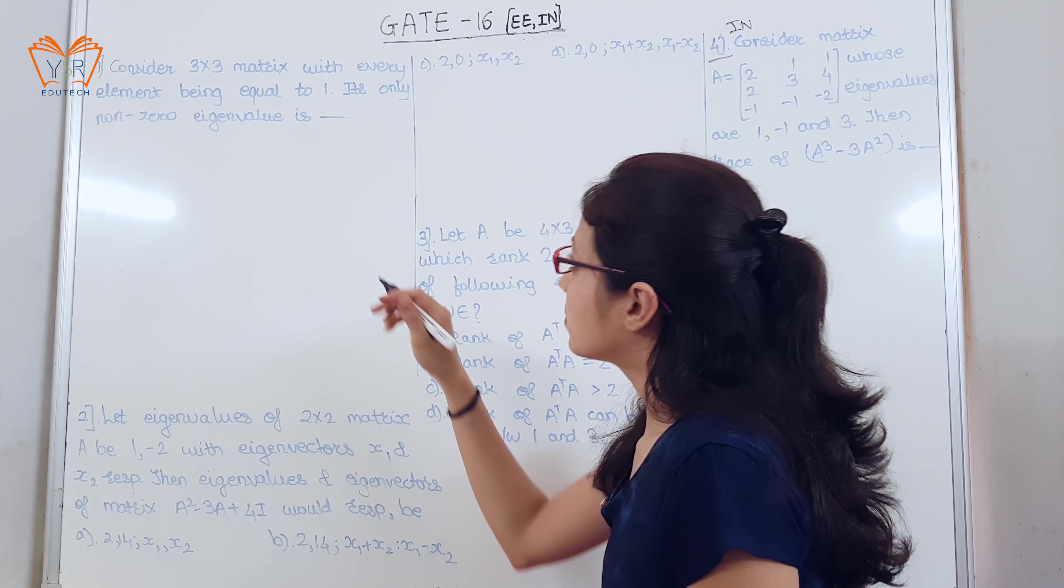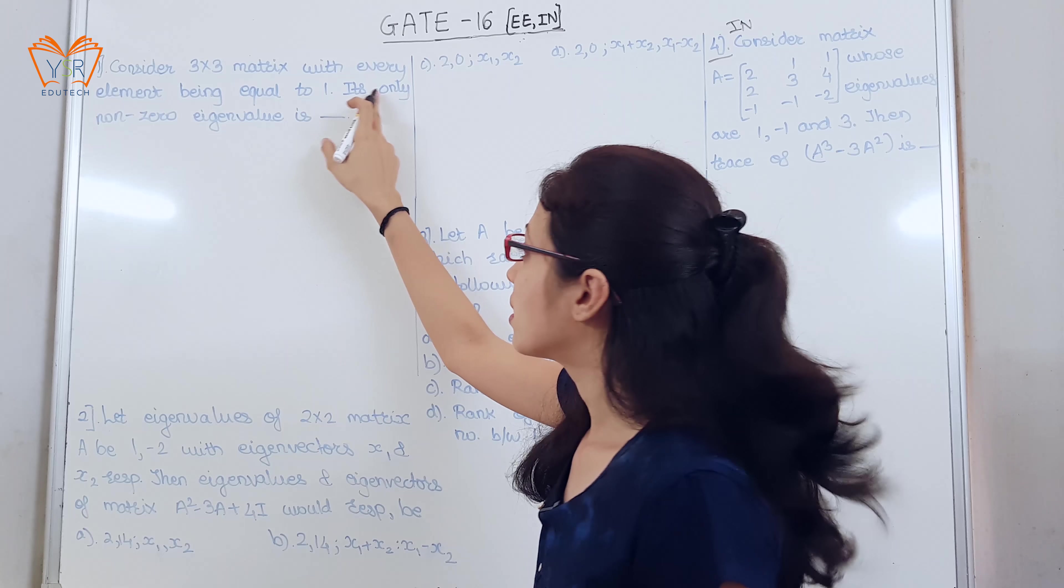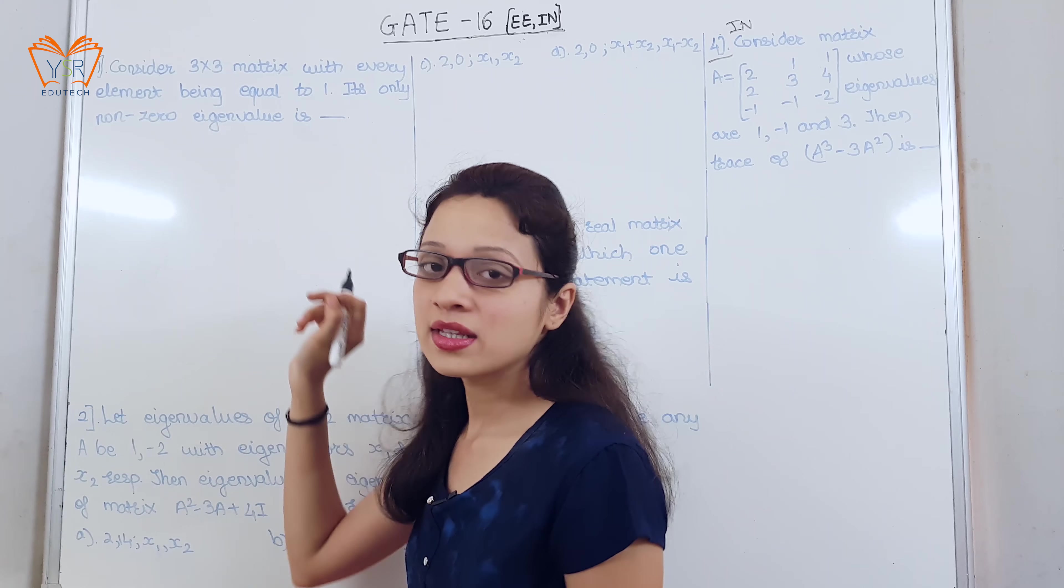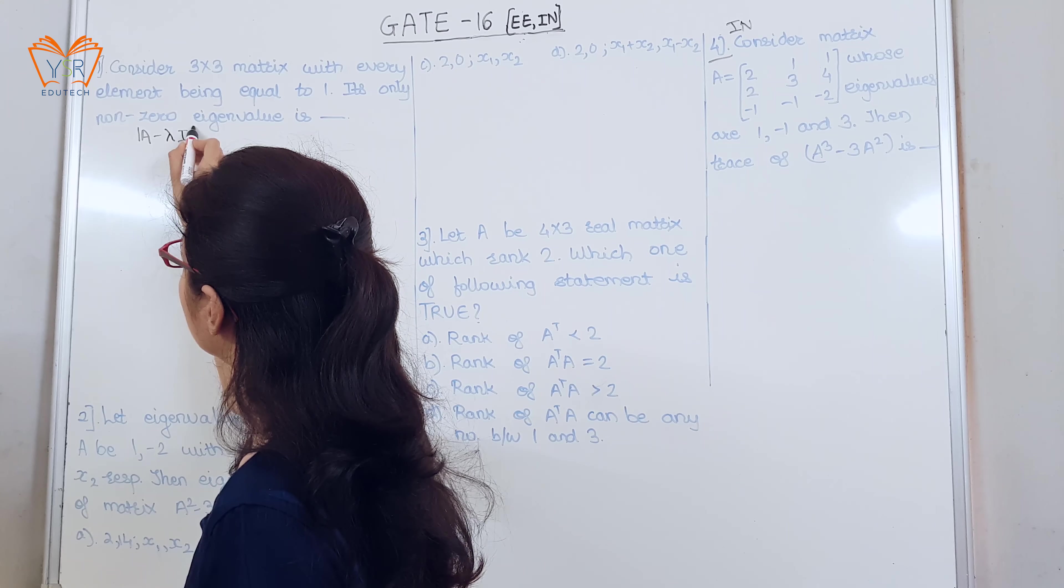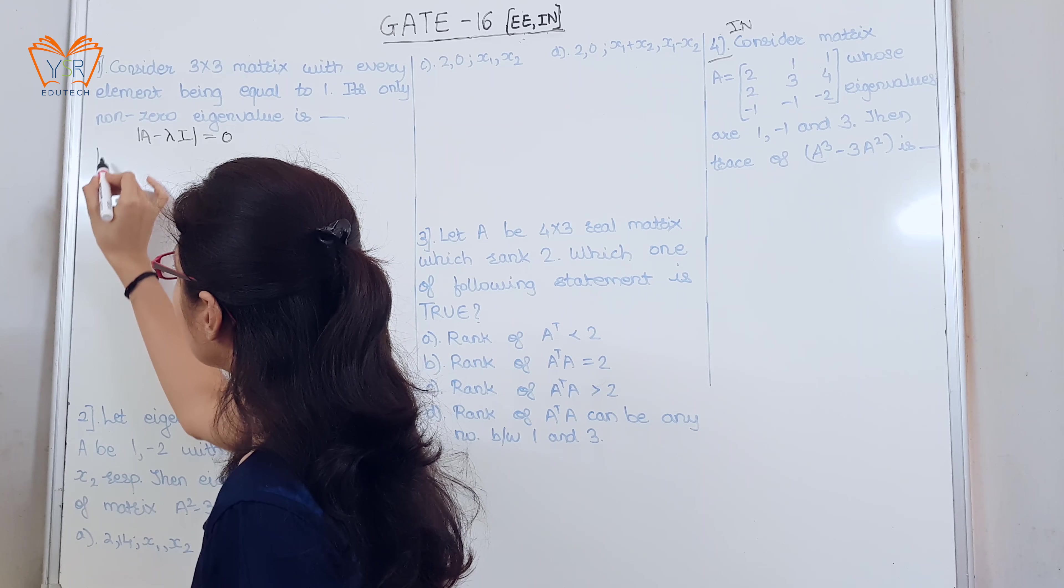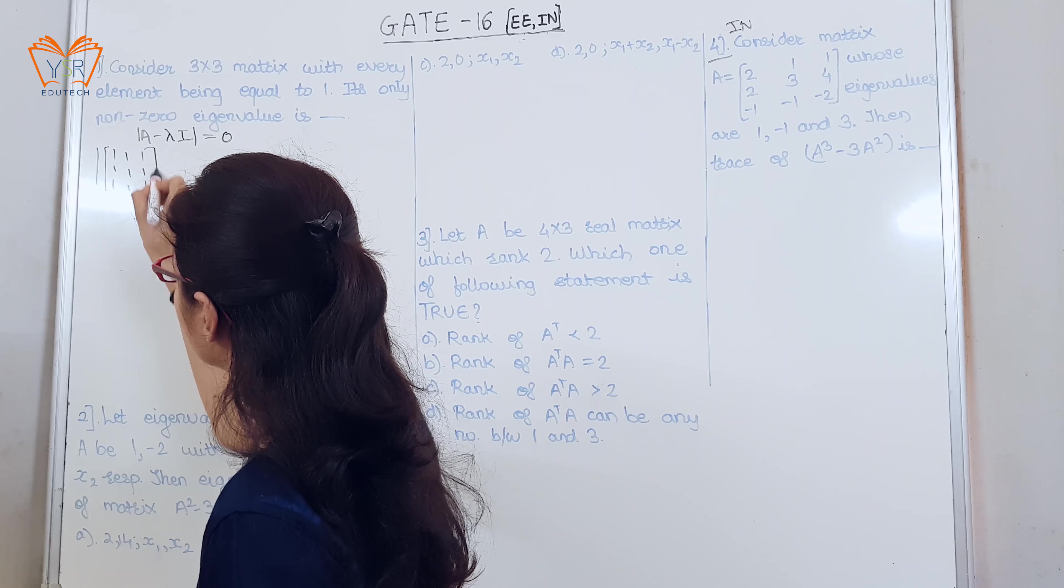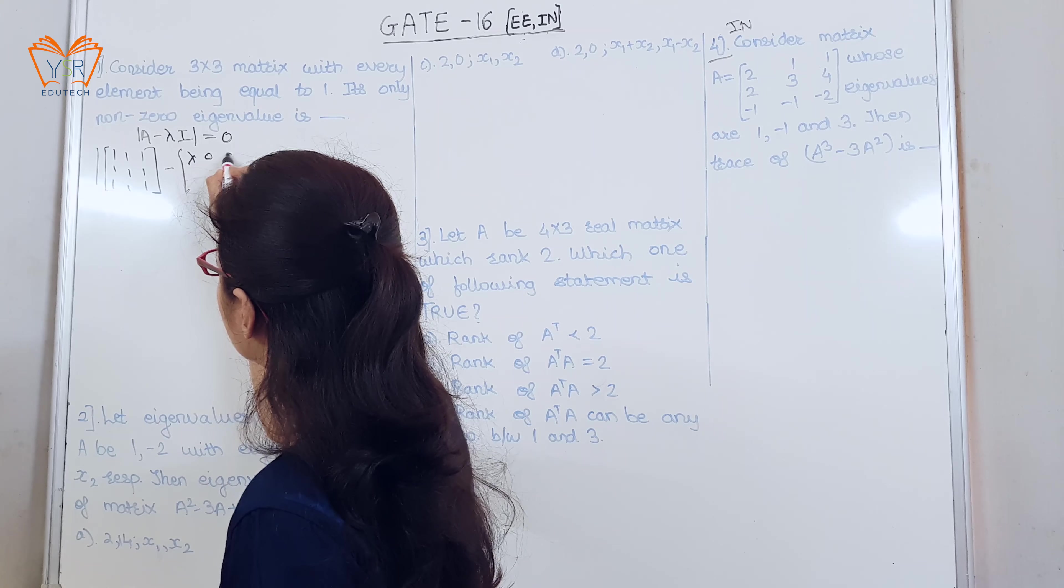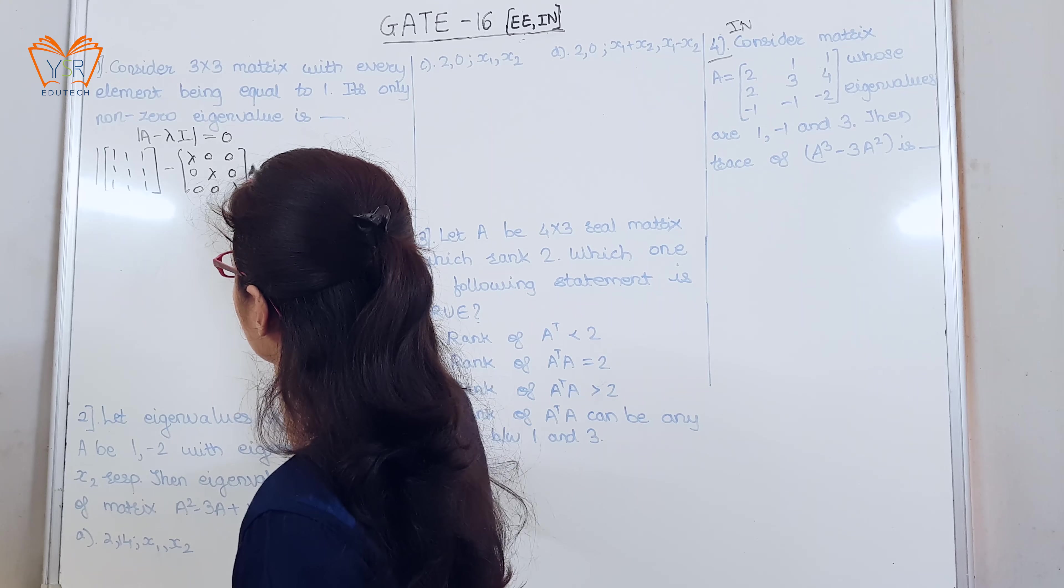Now the first example, consider 3 into 3 matrix with every element being equal to 1. Its only non-zero eigenvalue is. Now to find the eigenvalue, we know the formula that is determinant of A minus lambda I is equal to 0. Now A given is each element equal to 1. Lambda into I gives lambda 0 0 0 lambda 0 0 0 lambda is equal to 0.